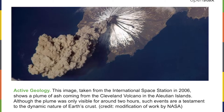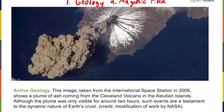Earth has a few very defining characteristics — a big three: its geology, which has a few facets of its own, its magnetic field, and its atmosphere. Earth is the only known world in the cosmos that supports life, and we can think of that as following from these big three defining characteristics.